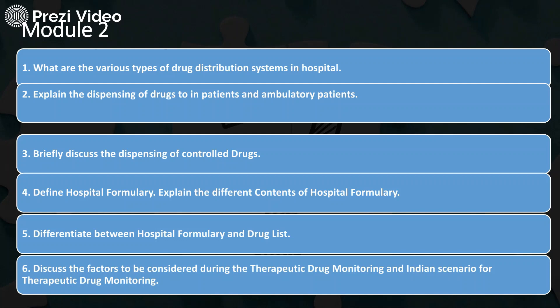Now for module 2: what are the various types of drug distribution systems in hospitals? Explain the dispensing of drugs to in-patients and ambulatory patients. Briefly discuss the dispensing of controlled drugs. Define hospital formulary and explain its different contents. Differentiate between hospital formulary and drug list. Discuss the factors to be considered during therapeutic drug monitoring and the Indian scenario for therapeutic drug monitoring.